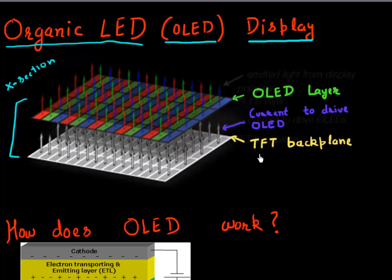These are typically, in the case of OLED displays, made of this material called low temperature polysilicon. And these essentially provide the current which is needed to drive these OLED displays.